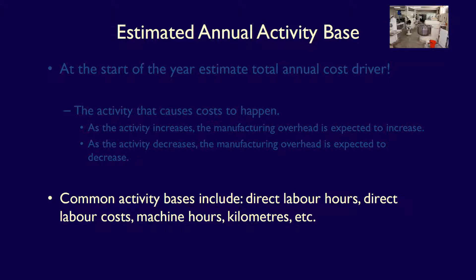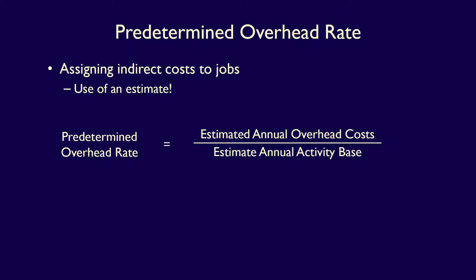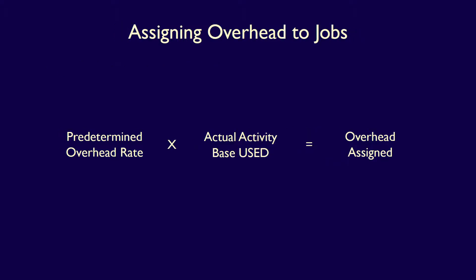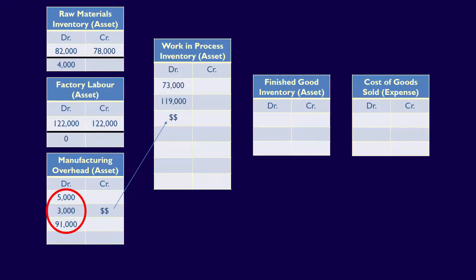Common activity bases include direct labor hours, direct labor costs, machine hours, kilometers driven, and many more. Using actual information about the previous annual overhead activity, we can estimate what the annual overhead activity will be for the upcoming year. Using our estimated annual overhead costs divided by the estimated annual activity base, we calculate the predetermined overhead rate. Once we have it, we multiply it by the actual activity base used in that particular job to determine how much overhead must be assigned. That assigned manufacturing overhead is then removed from the manufacturing overhead account and added into work-in-process inventory, representing the total overhead assumed to be used in the job.